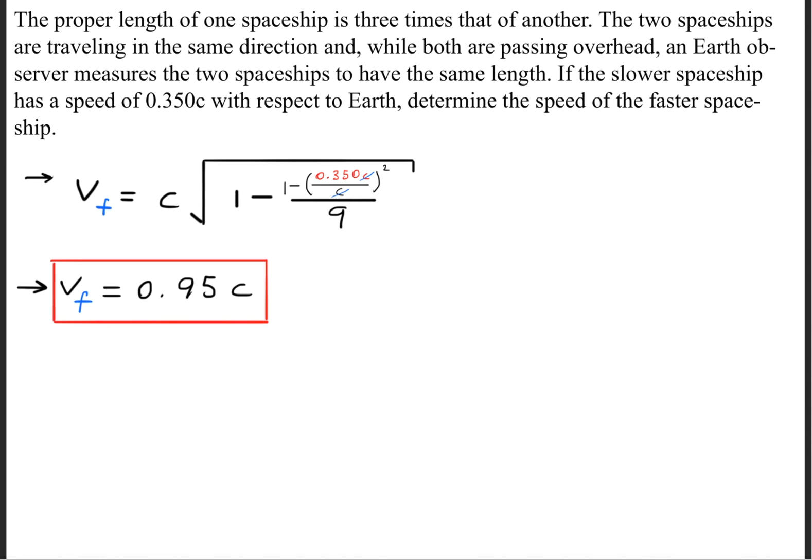After solving that, we'll get that the velocity or the speed of the faster spaceship is 0.95 times the speed of light.